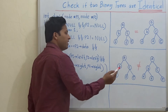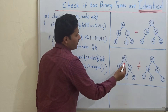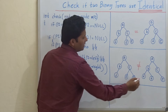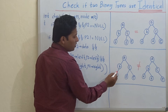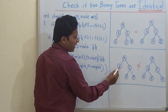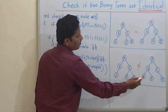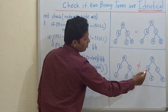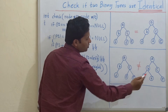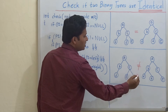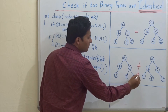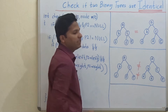Let's see the second example. In this example you can see B holds one child here, but in this tree B holds two children. So these two trees are not identical.